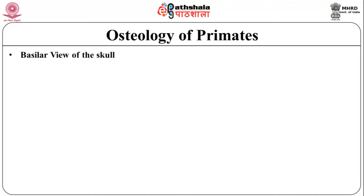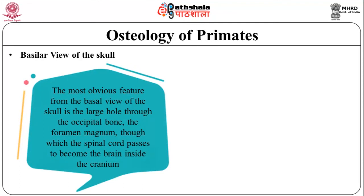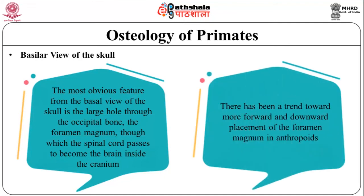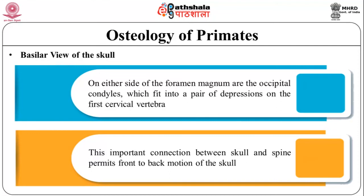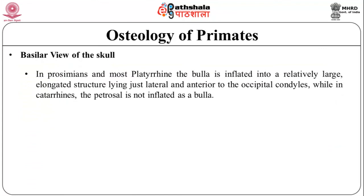Now let us discuss the basilar view of the skull. The most obvious feature from the basal view is the large hole through the occipital bone — the foramen magnum — through which the spinal cord passes to become the brain inside the cranium. There has been a trend toward more forward and downward placement of the foramen magnum in anthropoids. On either side of the foramen magnum are the occipital condyles, which fit into depressions on the first cervical vertebra, permitting front-to-back motion of the skull. In prosimians and most platyrrhines, the bulla is inflated into a relatively large elongated structure lying just lateral and anterior to the occipital condyles, while in catarrhines the petrosal is not inflated as a bulla.